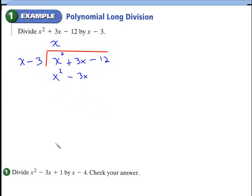After you've done that, you're going to change the signs. If this is positive, it becomes negative; if this is negative, it becomes positive. The reason why the signs change is because you're subtracting these terms. These should always cancel if you're doing the problem correctly — if they don't, you probably did something wrong. So this cancels, and this will give us 6x.